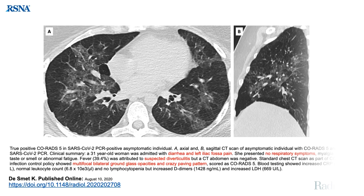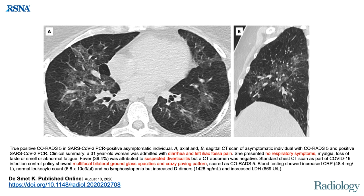An atypical presentation: a patient presented with diarrhea and left iliac fossa pain, no respiratory symptoms, myalgia, loss of taste or smell, or fatigue. Suspected diverticulitis, however CT abdomen was normal. A screening CT chest showed multifocal bilateral ground glass opacities and crazy paving pattern — CO-RADS 5. Testing showed increased CRP, D-dimers, and LDH with normal leukocyte count and no lymphocytopenia — suspicious of COVID-19 pneumonia. RT-PCR came back positive.